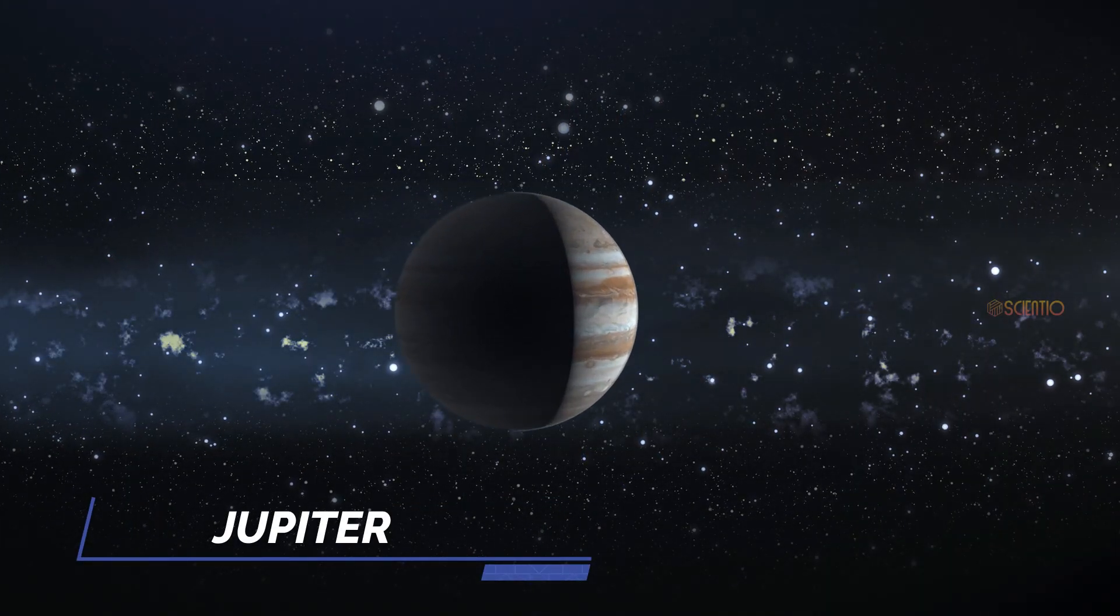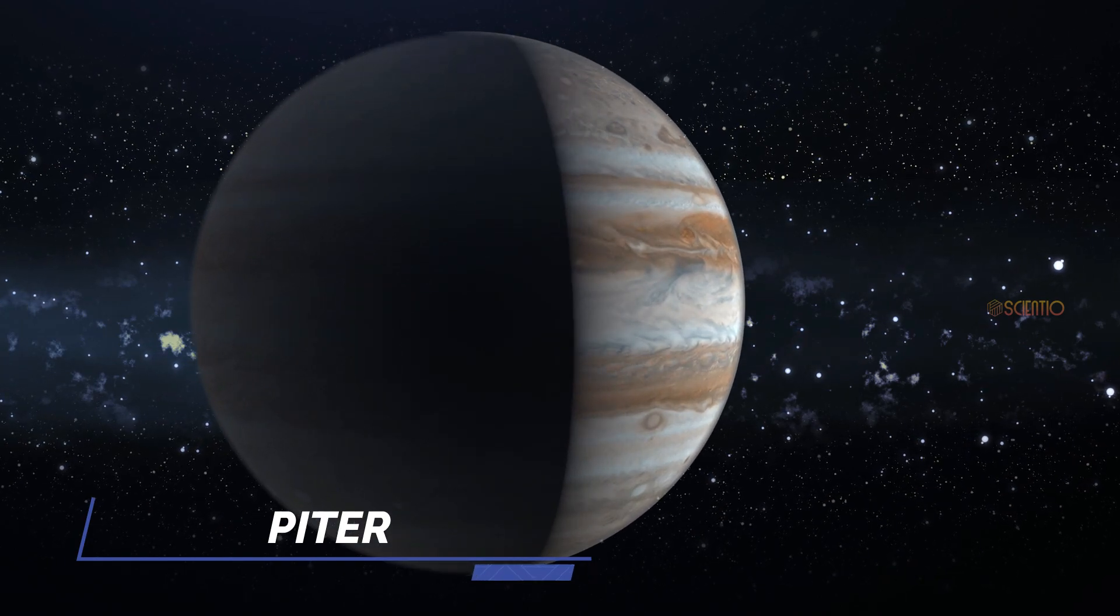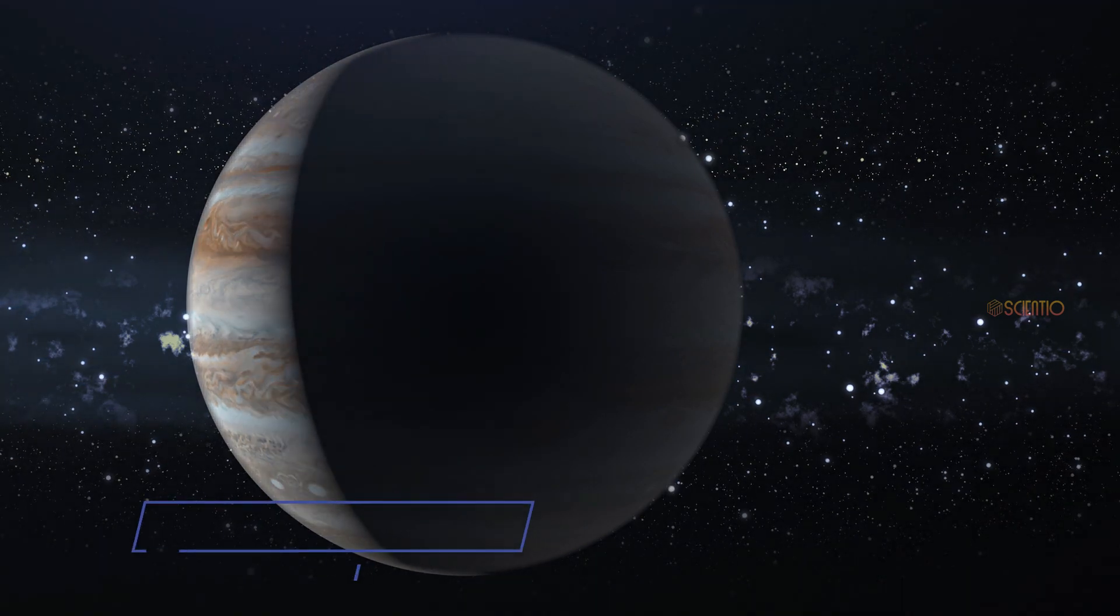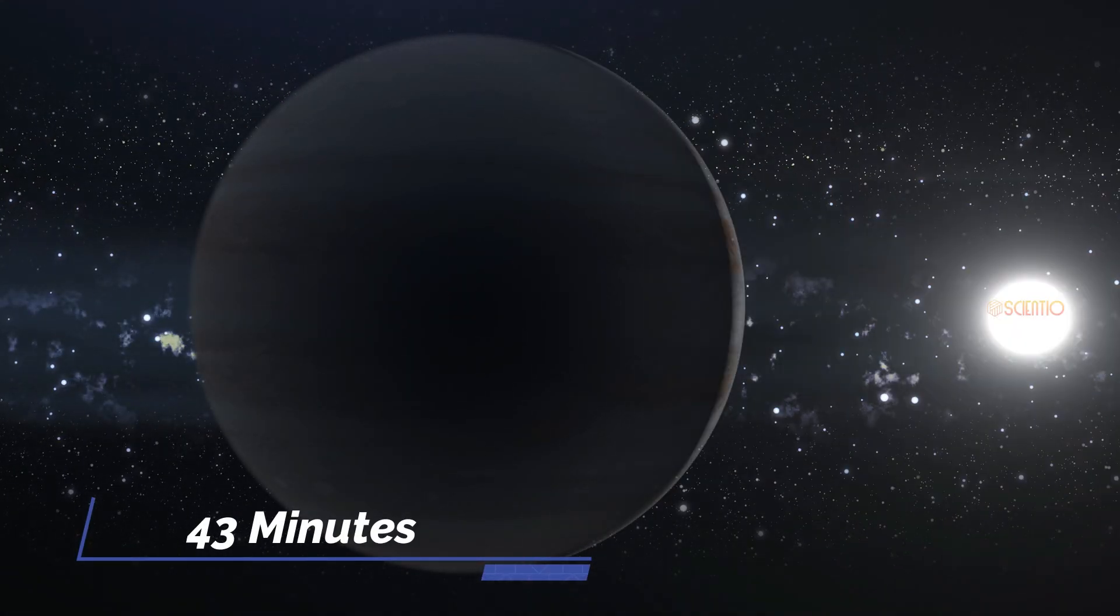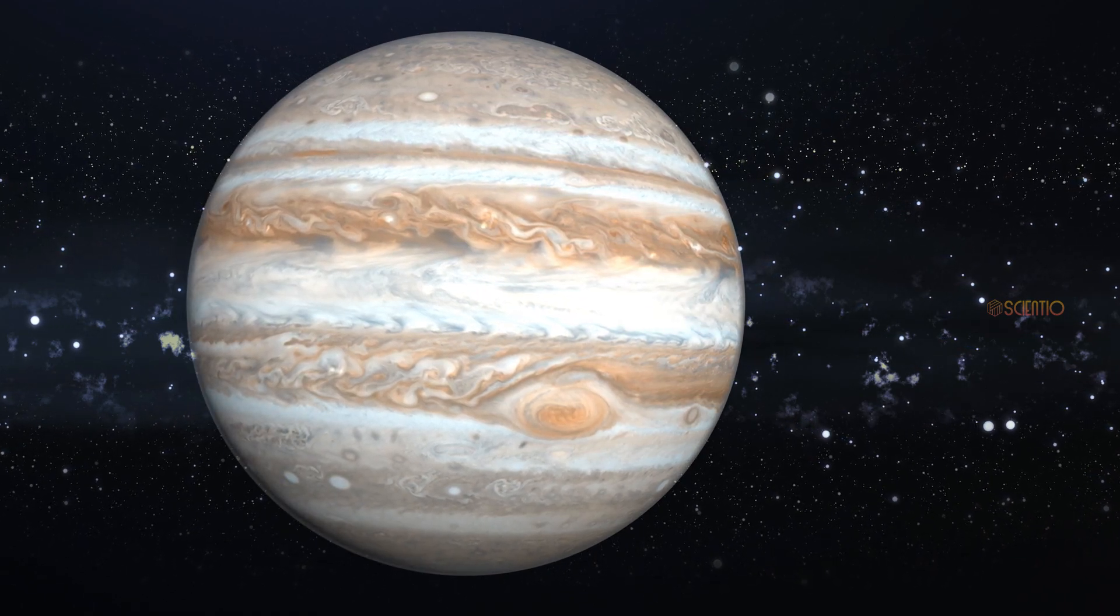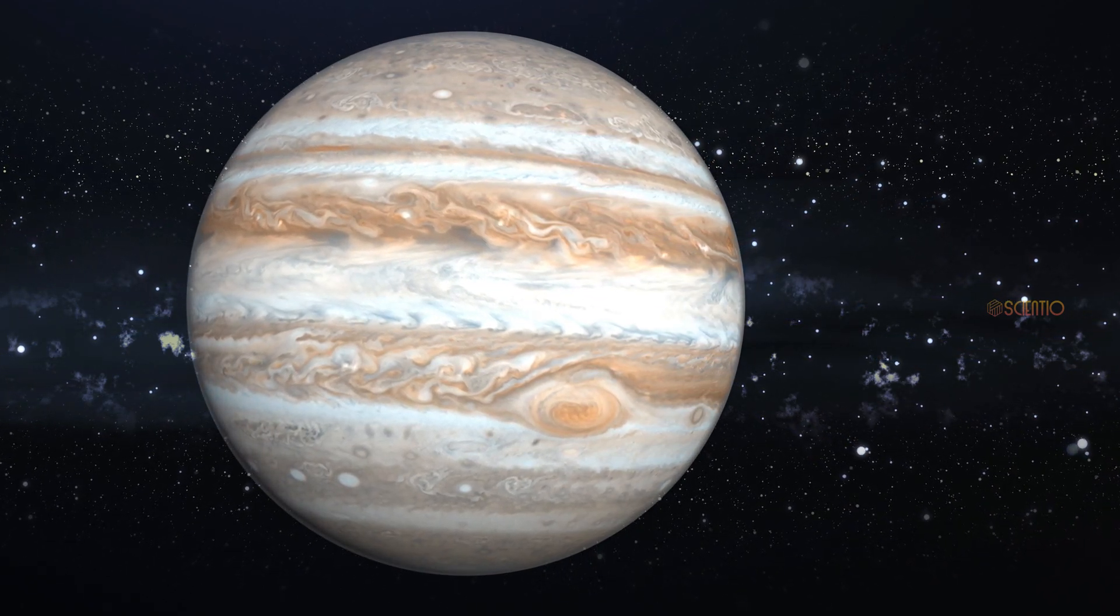Jupiter. Our journey now takes us to the gas giants, and we'll first come across Jupiter. Its massive size means that it will take us approximately 43 minutes to travel to Jupiter. Here we'll witness the turbulent atmosphere and massive moons.